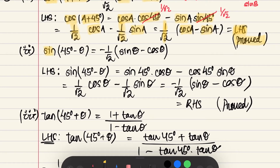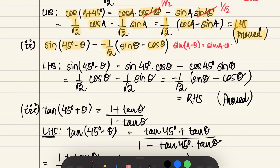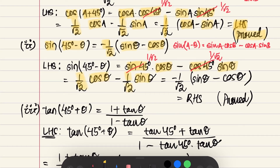So, this is what we have to do. sin(45° − θ) = −1/√2 · (sin θ − cos θ). sin(A − B) = sin A · cos B − cos A · sin B. So, sin(45° − θ) = sin 45° · cos θ − cos 45° · sin θ. Since sin 45° = cos 45° = 1/√2, we replace those values: 1/√2 · cos θ − 1/√2 · sin θ. Taking −1/√2 common gives sin θ − cos θ, which equals RHS. Hence proved.